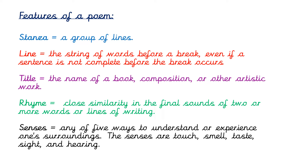Here I have a list of the different features of a poem — these are the things that we look for to identify whether something is a poem or not. Not all features are always present in every single poem, so just bear that in mind. First, we have stanza. A stanza in a poem is a group of lines — it's almost like a paragraph but laid out slightly differently. A line in a poem is a string of words before a break, even if a sentence is not complete before the break occurs. A line is different from a sentence because it doesn't always have a full stop at the end.